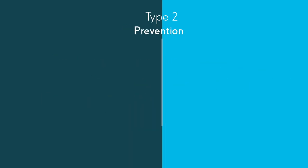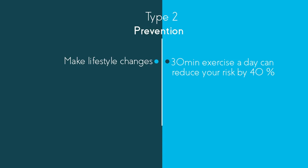Due to the risk factors, you may not be surprised to hear that lifestyle changes can help prevent the development of type 2 diabetes by achieving a healthy body weight. Thirty minutes of exercise a day can reduce your risk of developing type 2 diabetes by 40 percent.